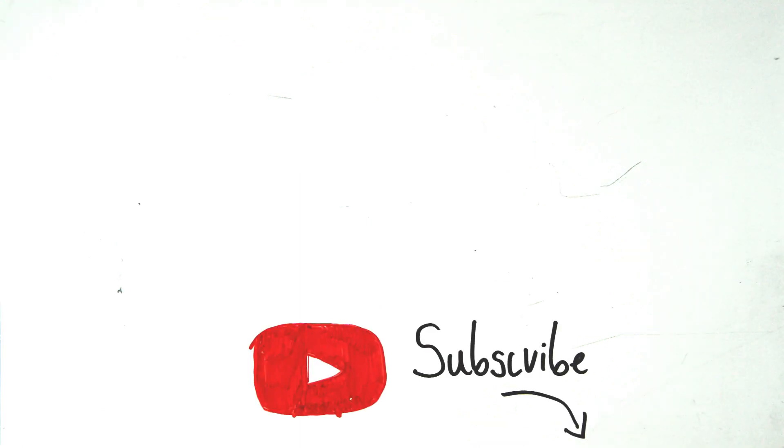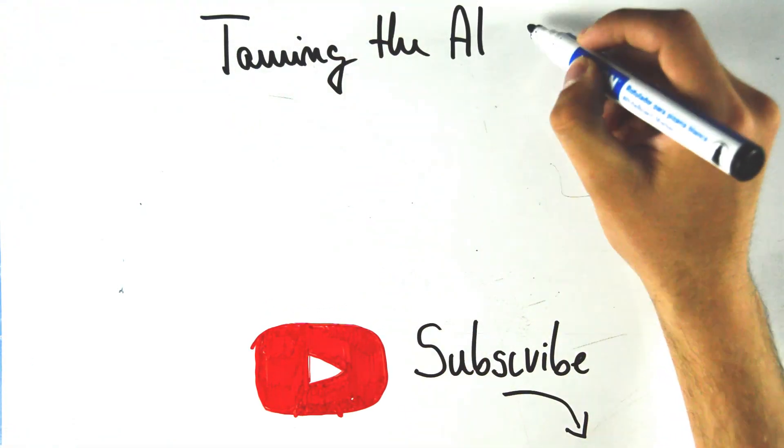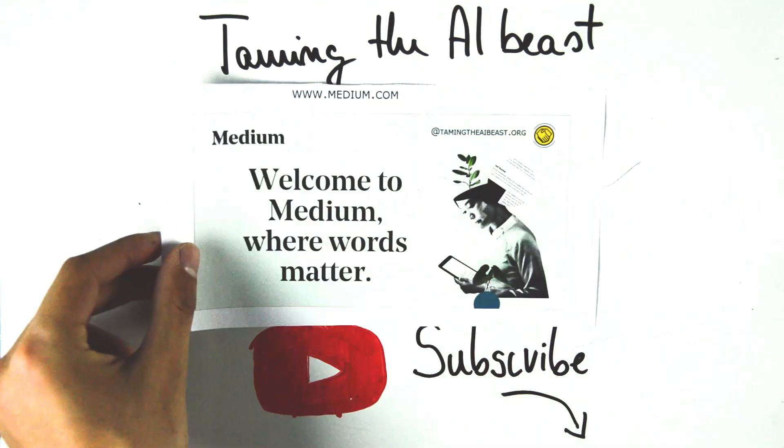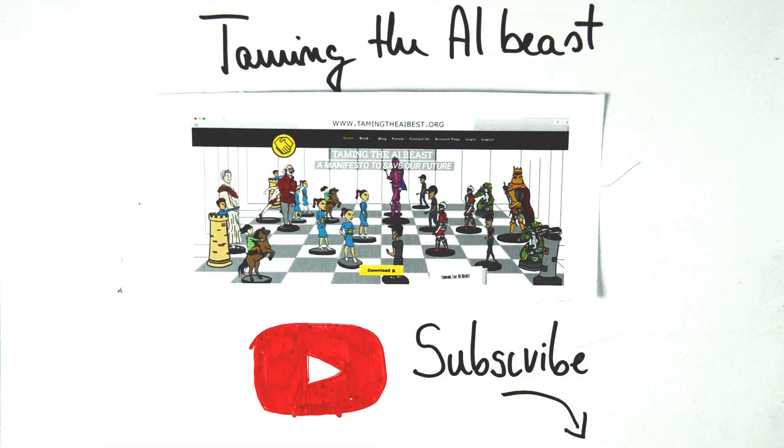If you are interested in the five other ways AI can take over from us, or you want to learn how you can help prevent a bad future, subscribe to our channel, read our blog at medium.com, or read our book online at our site, TamingTheBeast.org.